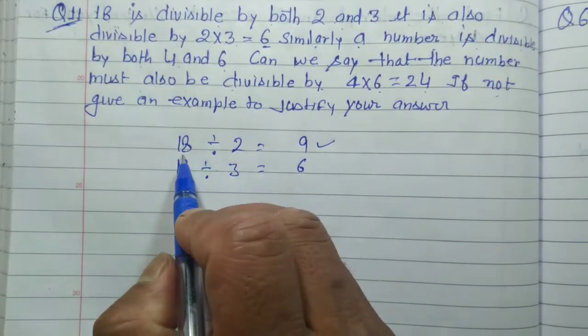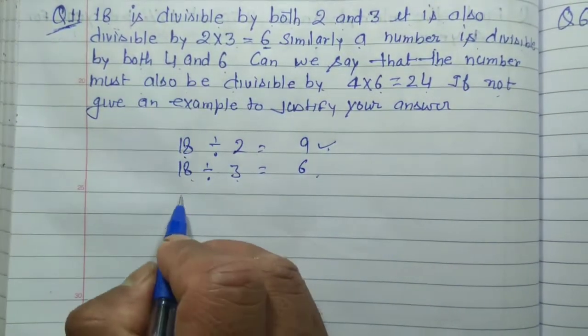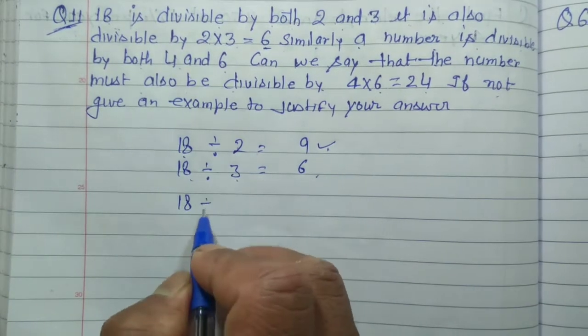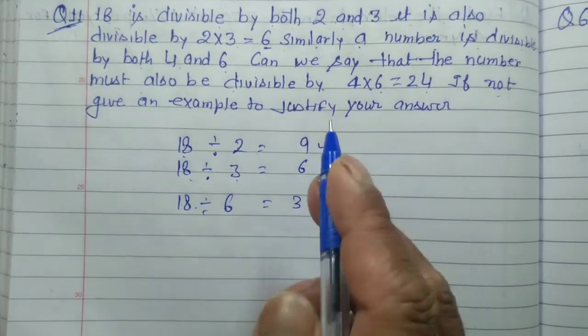It means that if divisible by 2 and 3, it's divisible by 6. If you divide 18 by 6, we get 3. Can we say that 18 is divisible by 6? Yes, it will be divisible.